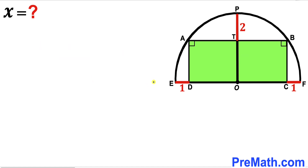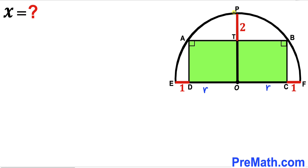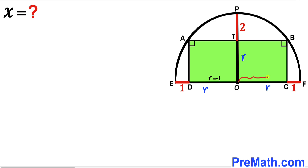Here's our very first step: I'm going to label the radius of this semicircle as lowercase r. We can see EO is the radius, so I'm going to label this as r, and likewise OF is radius r as well, and furthermore OP is our radius r as well. We know segment ED is 1, so the remaining segment OD is going to be r minus 1, and likewise segment OC is going to be r minus 1 as well. We know segment PT is 2 units, so the remaining segment OT is going to be r minus 2.